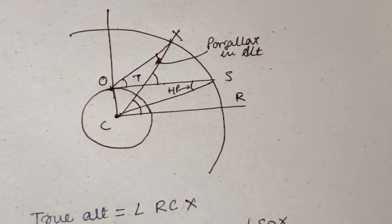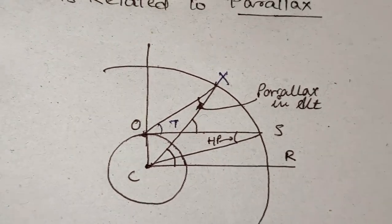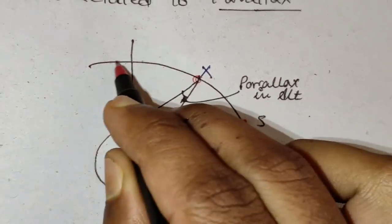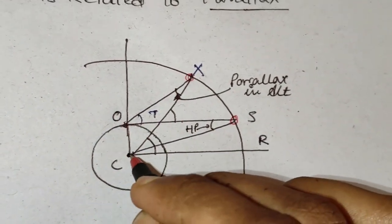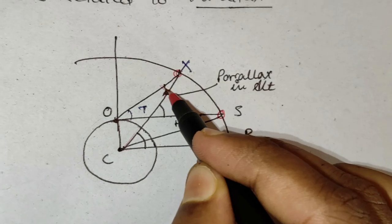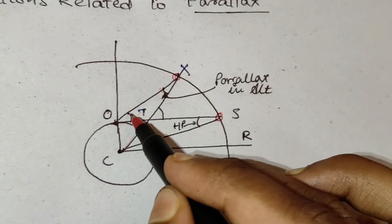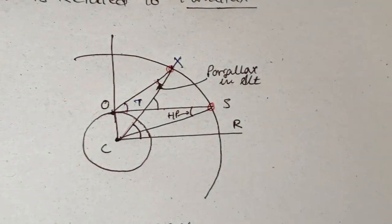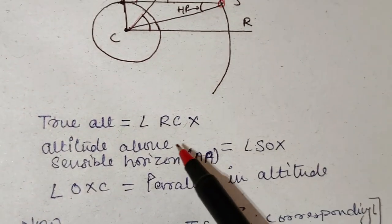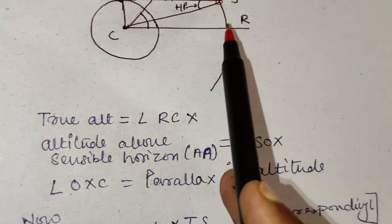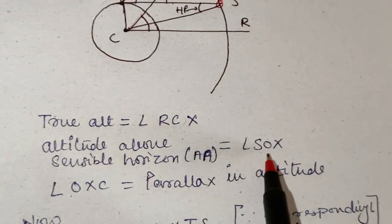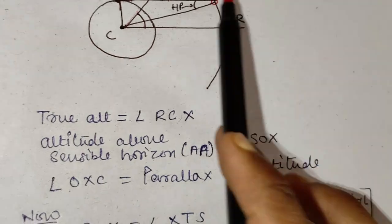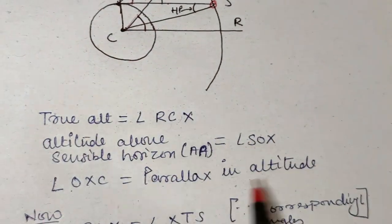Now we will see some derivations related to parallax. Here, this is the celestial body, this is the celestial sphere, this is the earth, this is the center of the earth, this is the parallax in altitude, this is horizontal parallax, this is apparent altitude, and this is the true altitude.